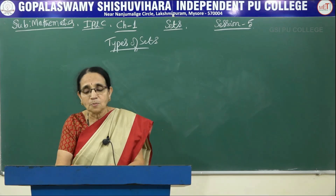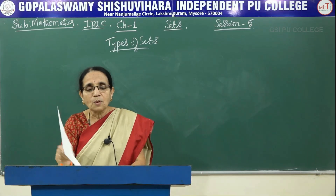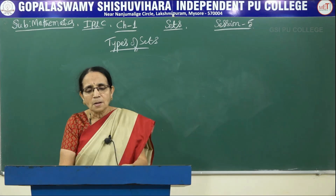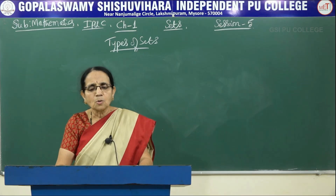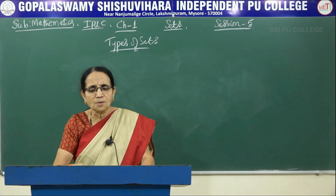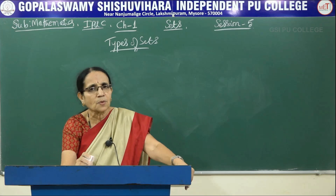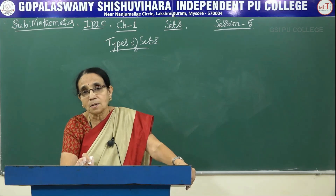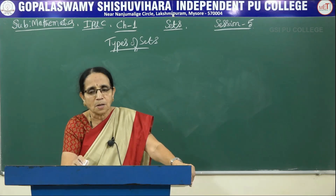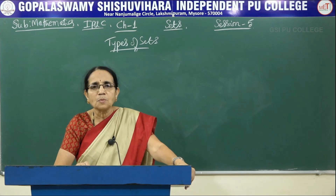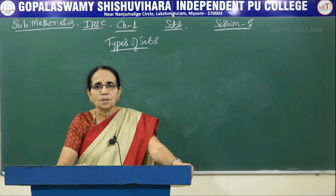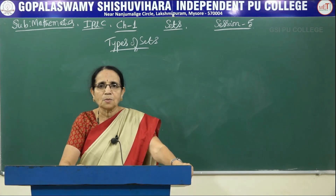We have discussed five types of sets: an empty set (no elements), a finite set (known exact number of elements), an infinite set (infinite number of elements, exact count unknown), a singleton (only one element), and equal sets (two sets containing the same elements, denoted A = B; if even one element differs, they are unequal). The definitions may not be directly asked, but problems on types of sets are expected — we will take up problems in the next session. Thank you.